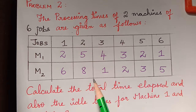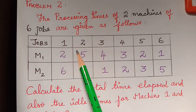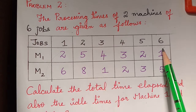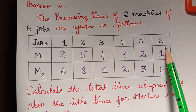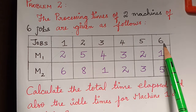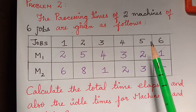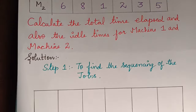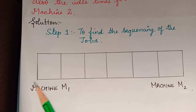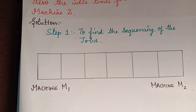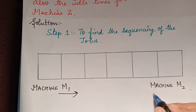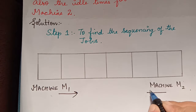First, we have to find the job sequencing — that is, the order in which the jobs have to be performed. There are six jobs, so we have to draw six boxes, writing machine one to the left and machine two on the right.